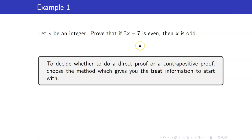Take note that you need to decide whether you will do a direct proof or a contrapositive proof. Choose the method which gives you the best information to start with. In our previous example, it's easier to work with the information that X is even and then proceed to showing 3X minus 7 is odd, instead of working with 3X minus 7 and going to X being odd.